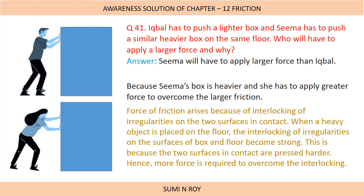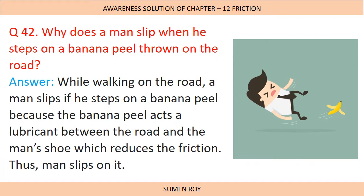Next question: Iqbal has to push a lighter box and Sima has to push a similar heavier box on the same floor. Who will have to apply a larger force and why? Sima will have to apply a larger force than Iqbal because her box is heavier and she has to apply greater force to overcome the larger friction. When a heavy object is placed on the floor, the interlocking of irregularities on the surface of the box and floor becomes strong because the two surfaces are pressed harder. Hence more force is required to overcome the interlocking.